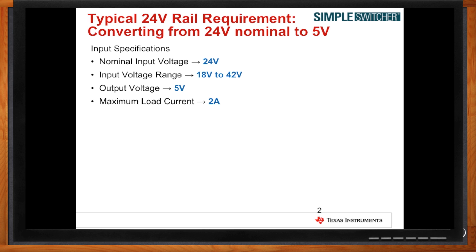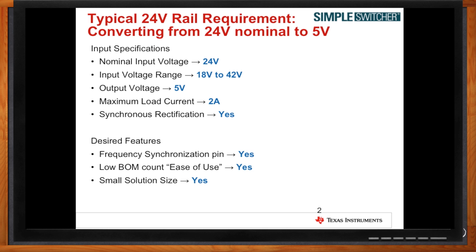So what we're looking at is a nominal input voltage of 24 volts, but you want coverage from 18 volts to 42 volts in case you have different types of transients. With 5 volts output and 2 amps load current — do you think you'd need synchronous rectification? Sure. And features such as frequency synchronization, low BOM count, and small solution size? Always. The benefit of these is that today's boards require small solution size with the advancement of technology, so we design our parts to fit these end applications.